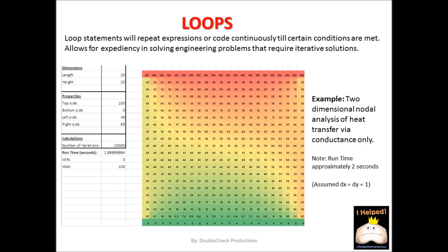For instance, the image here is a snapshot of a two-dimensional nodal analysis involving heat transfer. What we are seeing here is the result of 10,000 repetitive calculations that were carried out using loop statements. This would have taken a person an absurd amount of time to accomplish by hand, but a computer was able to do this in about two seconds. A loop statement is a piece of code that repeats until certain conditions are met, and that's what allows us to do a lot of grunt work calculations using them.